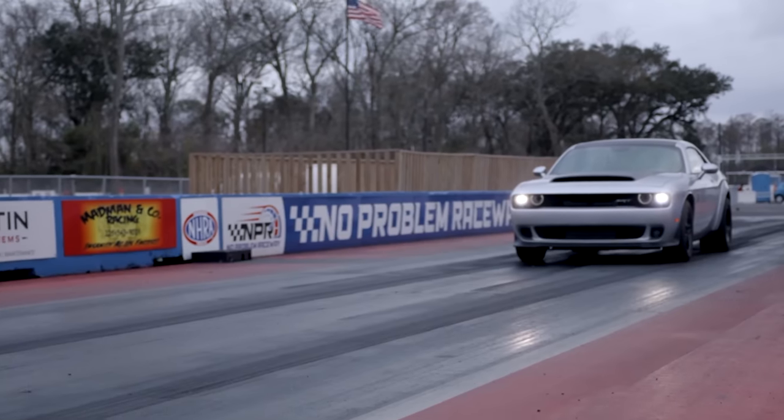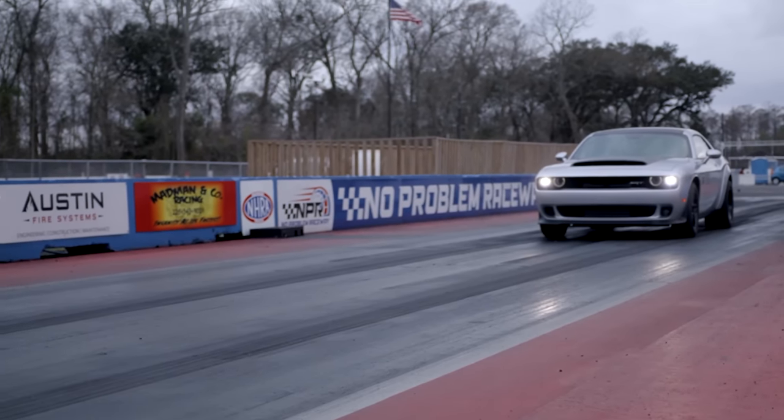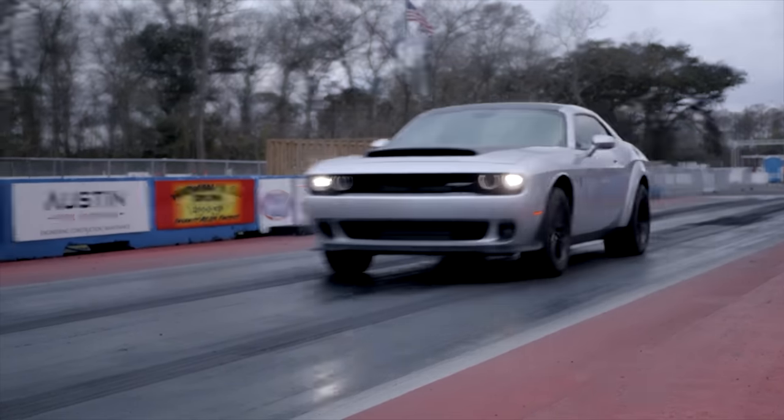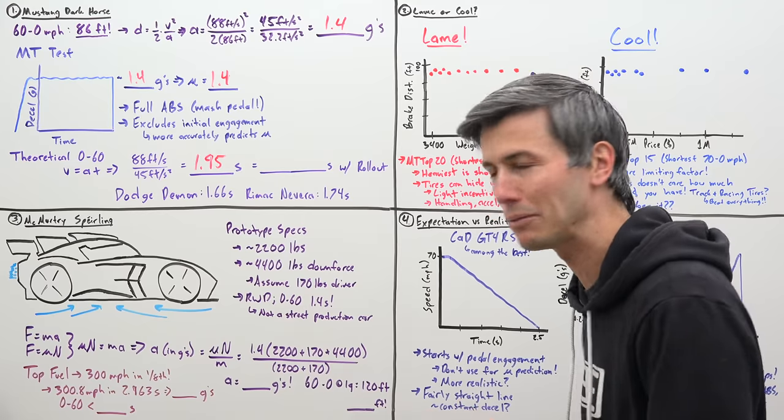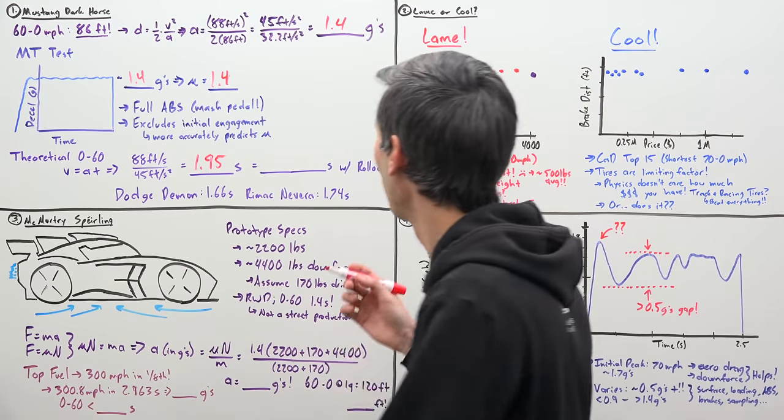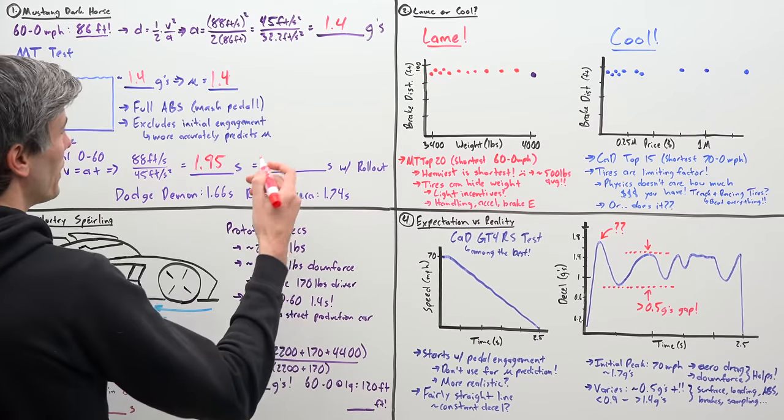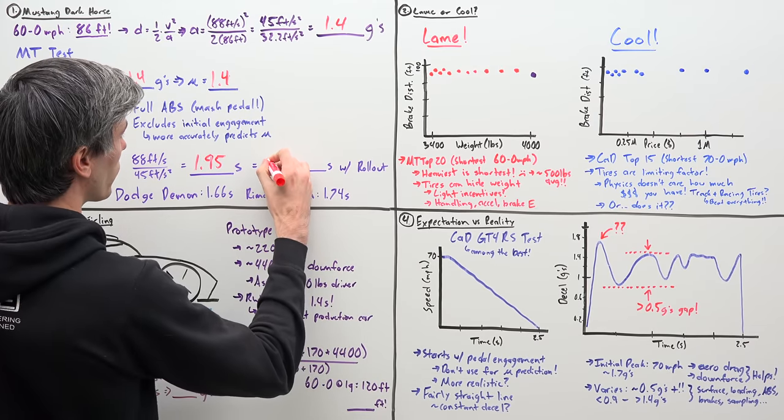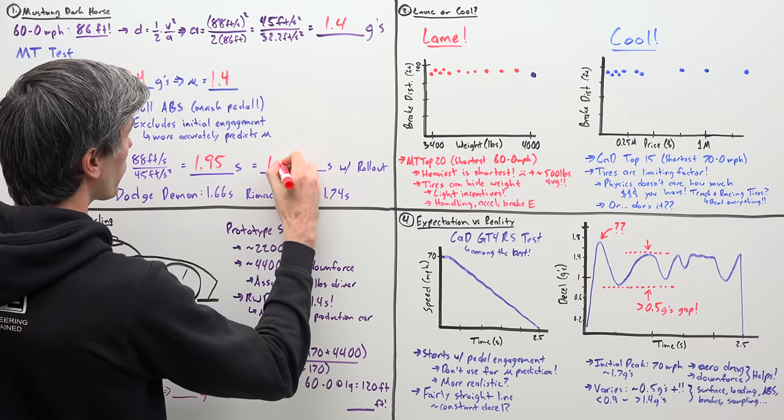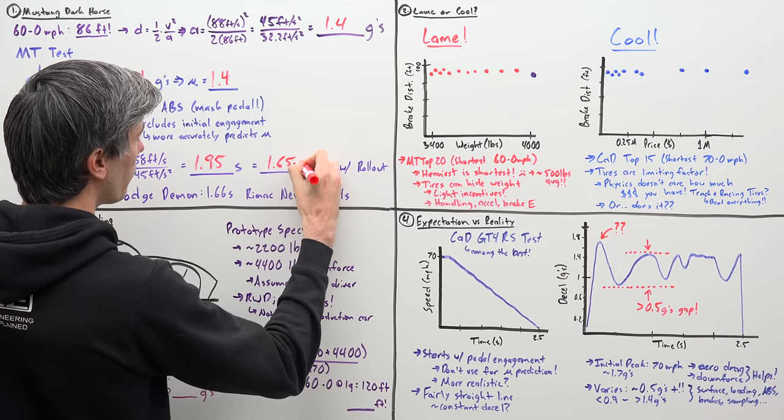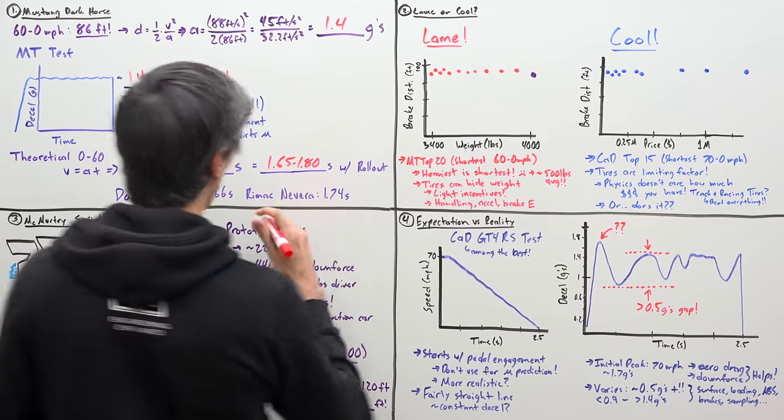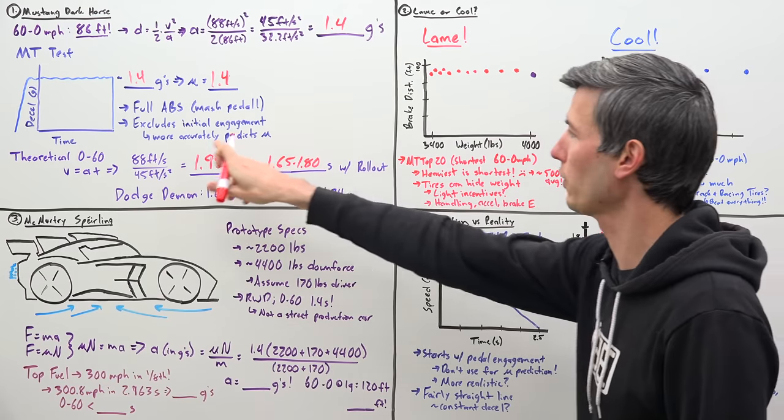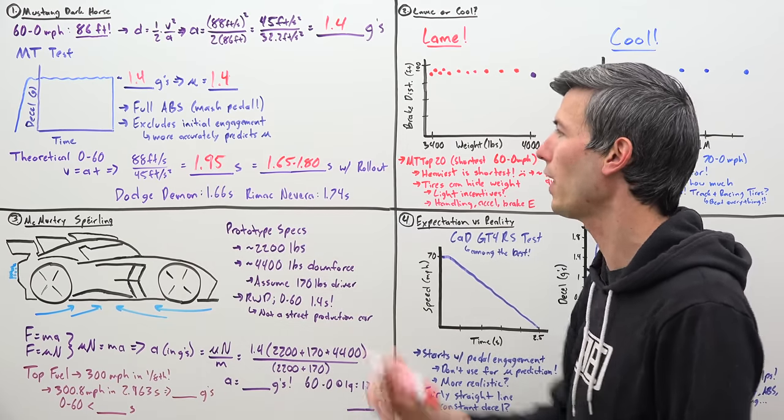So using today's tires, yes, it is possible to break the two second barrier. Now I am talking about a true zero to 60. So it is common within the industry to delete the first foot. This is called rollout. I don't agree with it, but it is the norm. And with rollout, you would be deleting about 0.15 to about 0.3 seconds.